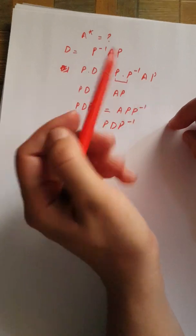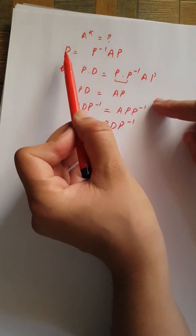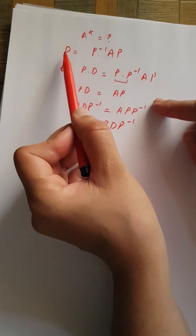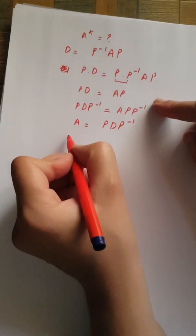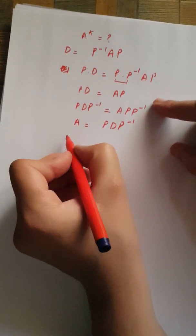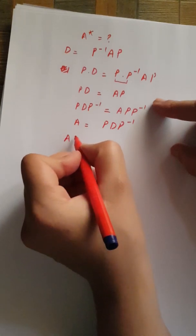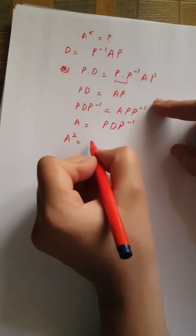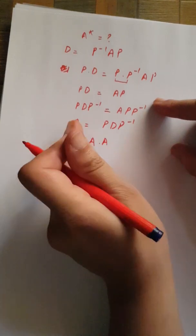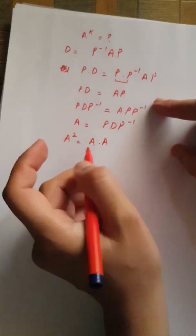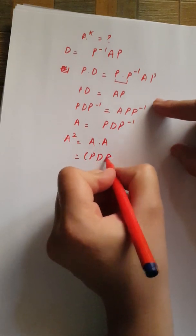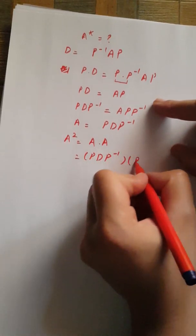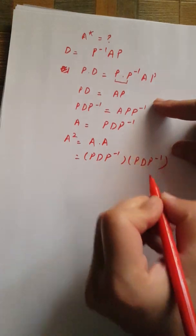Since the diagonalization procedure results in diagonal matrix D, let's move to the second step: computing higher powers of A. If I want to determine A squared, this equals A times A. Since A equals PDP inverse, let's substitute the values: A squared equals PDP inverse times PDP inverse.